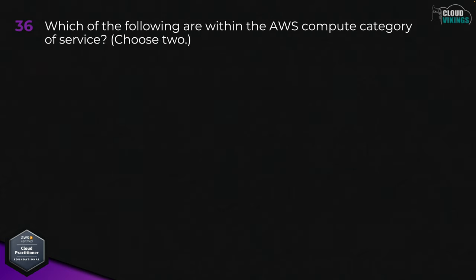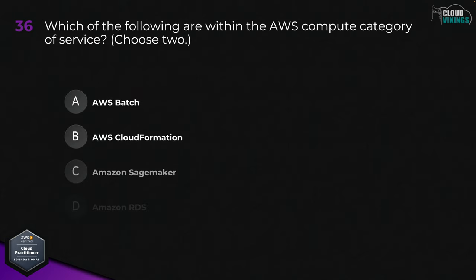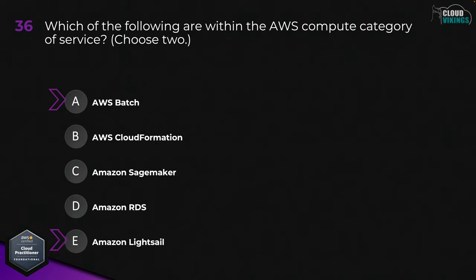Question thirty-six: which of the following are within the AWS Compute category of services? Choose two. Options are: A, AWS Batch; B, AWS CloudFormation; C, Amazon SageMaker; D, Amazon RDS; or E, Amazon Lightsail. The two correct answers are A, AWS Batch, and E, Amazon Lightsail.